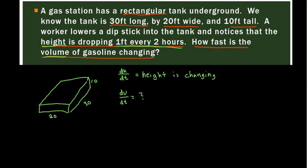And they tell us the dh/dt, right? They say the height is dropping 1 foot every 2 hours. That is 1 foot every 2 hours, or half a foot an hour. Those two are the same thing. So we know dh/dt and we need to find dv/dt.